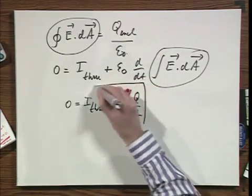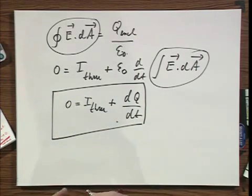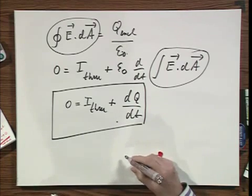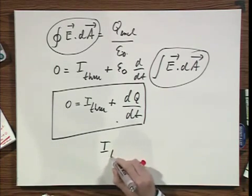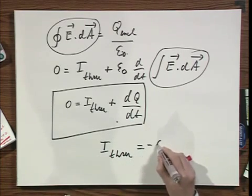And this is a totally trivial result. It is immediately obvious. What it's telling you is that I through this closed balloon equals minus dQ/dt.